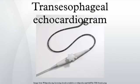A transesophageal echocardiogram, or TEE, is an alternative way to perform an echocardiogram. A specialized probe containing an ultrasound transducer at its tip is passed into the patient's esophagus. This allows image and Doppler evaluation which can be recorded. It has several advantages and some disadvantages compared to a transthoracic echocardiogram.